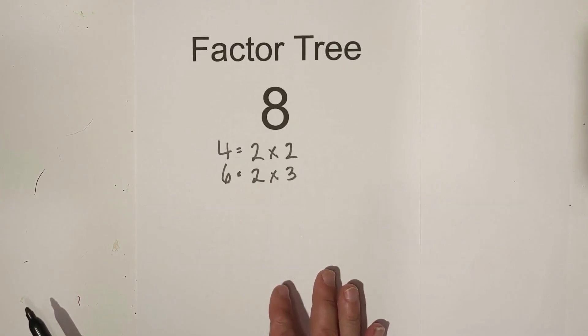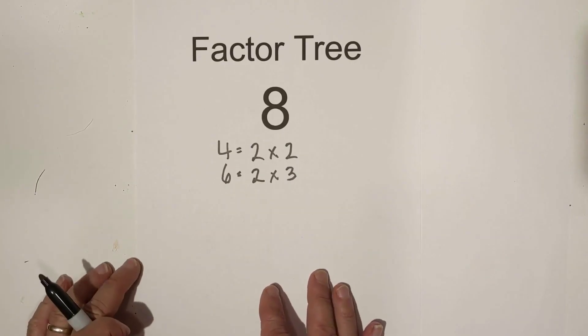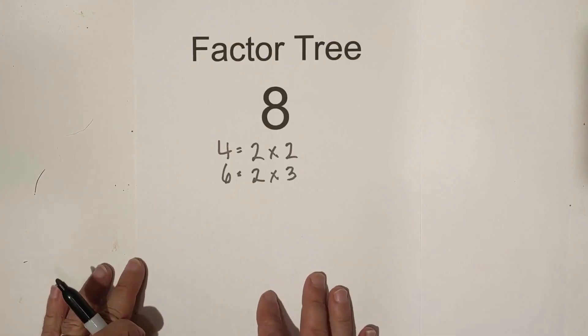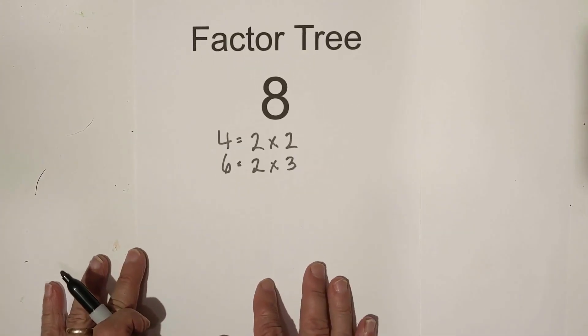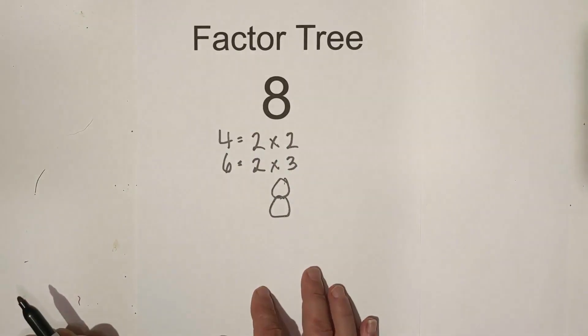So all prime factorization is is finding the prime numbers that multiply to a given composite number. So that's how a factor tree helps. Let's begin with eight. I'm gonna rewrite the eight. Now tip number one: